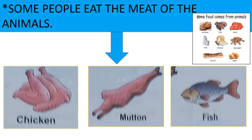Children, some people eat the meat of animals. For example, chicken — c-h-i-c-k-e-n — then mutton — m-u-t-t-o-n — then fish — f-i-s-h. See the right side of the corner. Some foods come from animals. Learn all these words with their spelling.